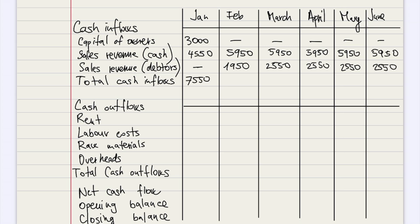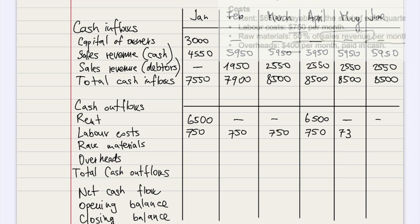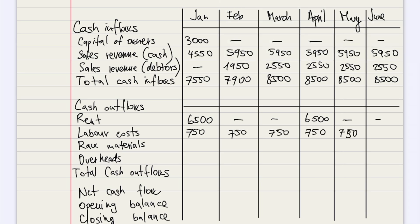When we're finished, we put in the total cash inflows and continue to the cash outflows. The rent we insert in January and April. We can put lines across the months where we have no cash outflows. Then we insert the labor costs — $750 per month.